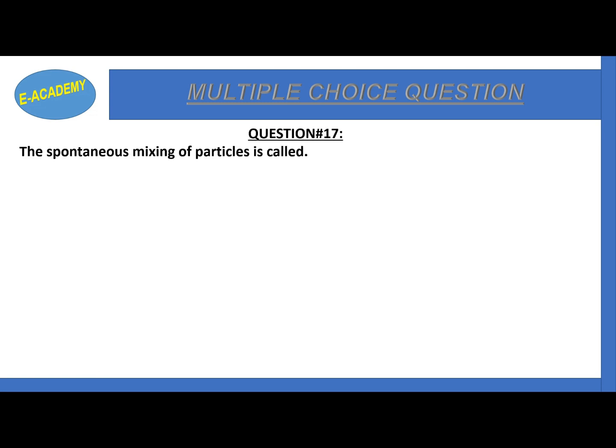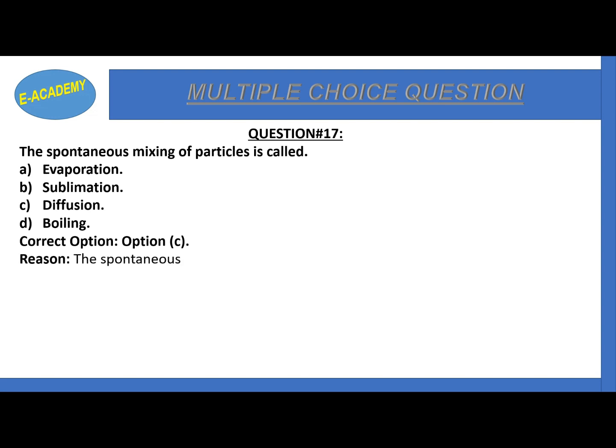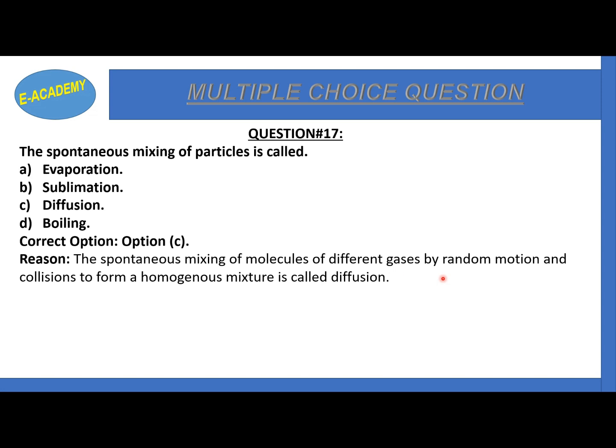Question number 17: The spontaneous mixing of particles is called evaporation, sublimation, diffusion, or effusion? The correct option is C: diffusion. The spontaneous mixing of molecules of different gases by random motion and collision to form a homogeneous mixture is called diffusion. Gases mix on their own due to random motion without any applied force, forming a homogeneous mixture.